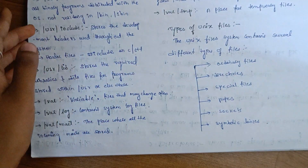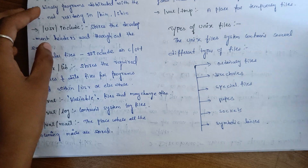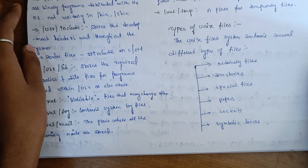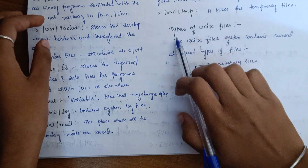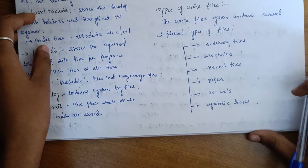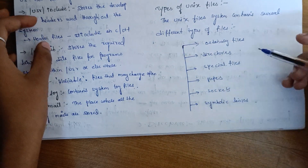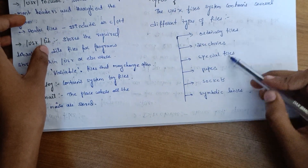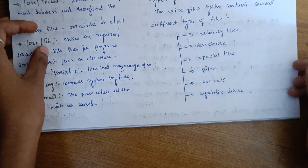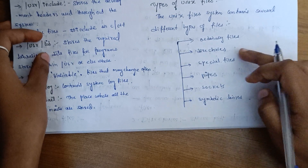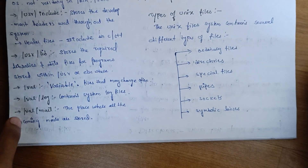Hello friends, welcome to our channel. We have already discussed the Unix file system in the last video. At present we cover types of Unix files. There are 6 types of Unix files: ordinary files, directories, special files, pipes, sockets, and symbolic links.